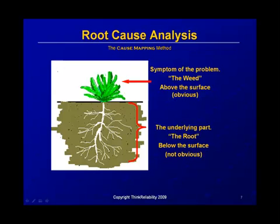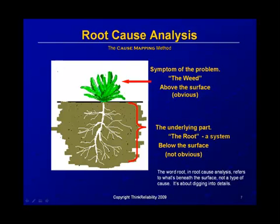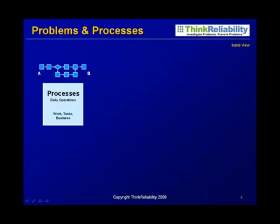Root cause analysis is a very common tool. Our cause mapping method takes an extremely fundamental approach: the weed is just a symptom — it's what's above the surface, what's obvious. What's beneath the surface, the root, is what you need to dig into. The word 'root' in root cause analysis, from our perspective, just refers to what's beneath the surface. Root cause analysis is about digging into the details of an issue, not necessarily finding the root cause as a singular thing.